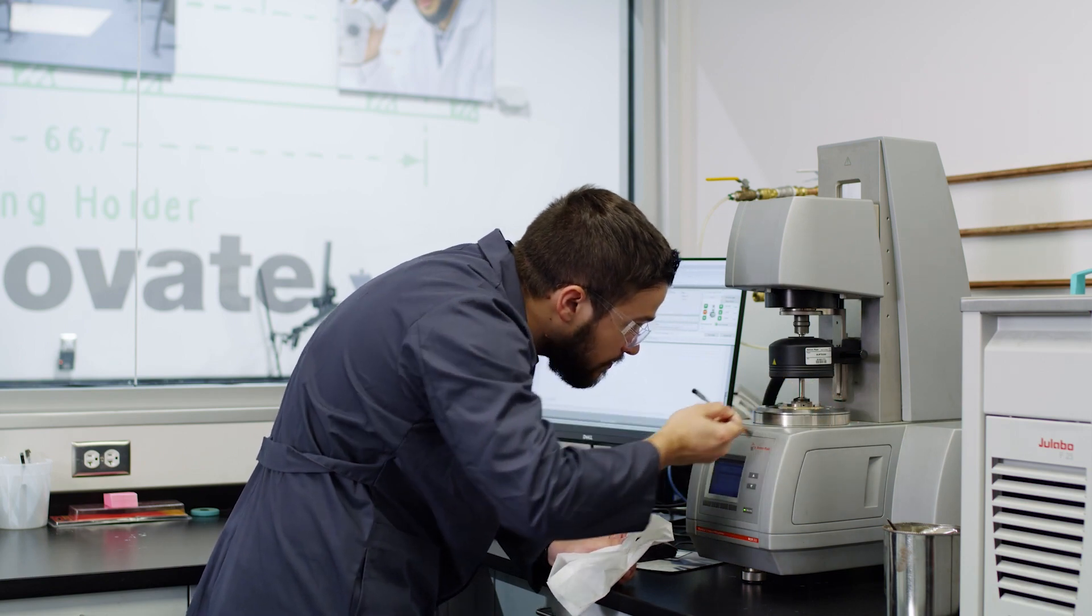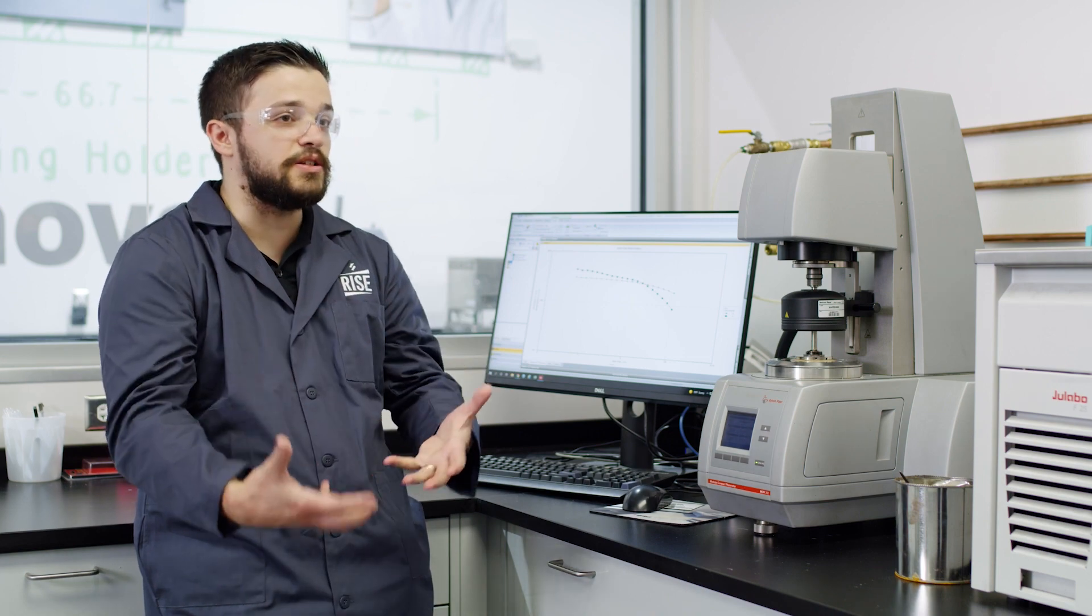One of the things we do with the DSR is assess the elastic properties of our modified bitumen blends. We do this through a physical property known as the elastic modulus. Generally, we want this elastic modulus to be in a defined range that works well for us. One thing we've noticed is that as the blend ages, this modulus tends to increase.